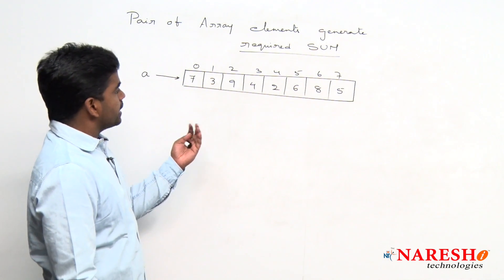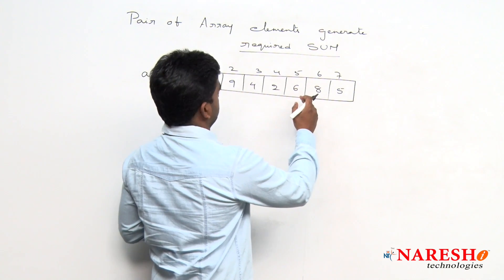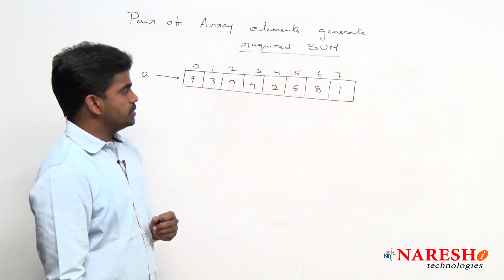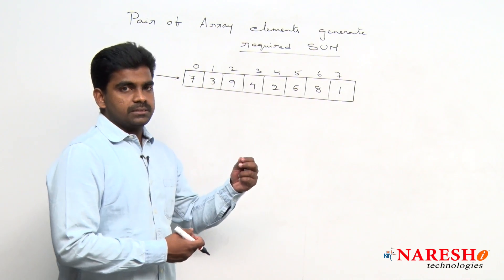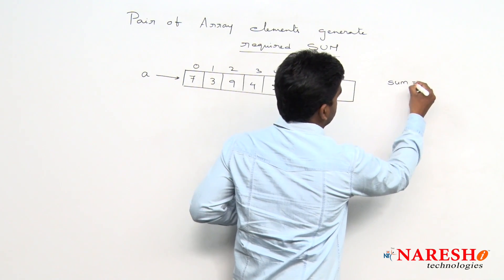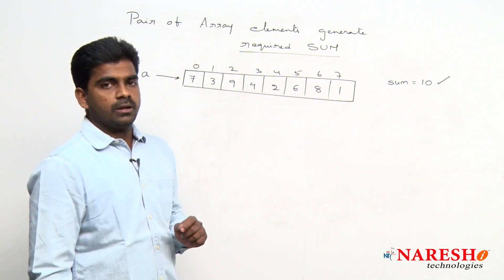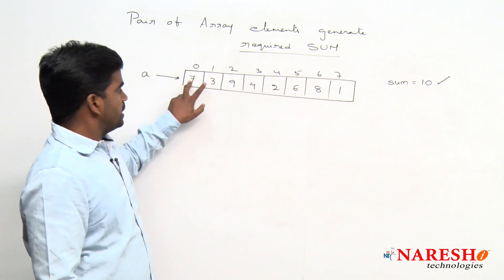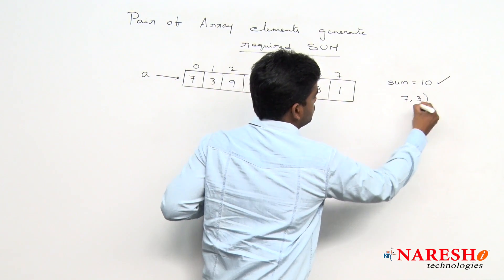Now we collect the required sum. Suppose the required sum is 10. How many pairs will generate the required sum? When compared with 7, yes — 7 plus 3 will generate 10, so 7 comma 3 is one pair.